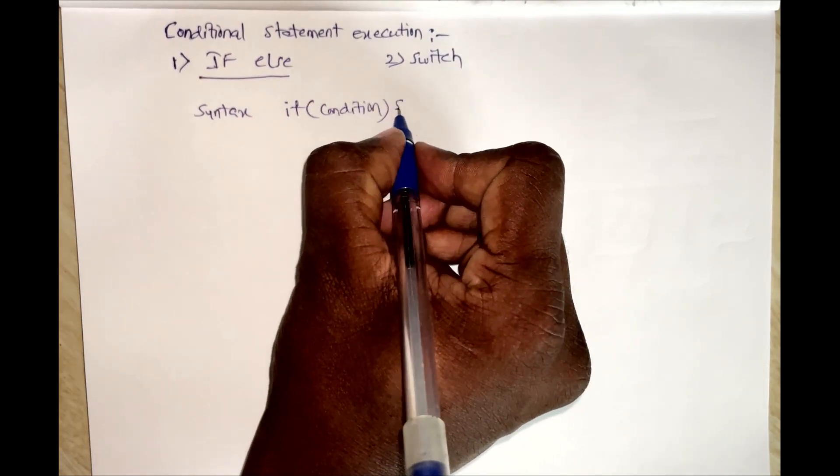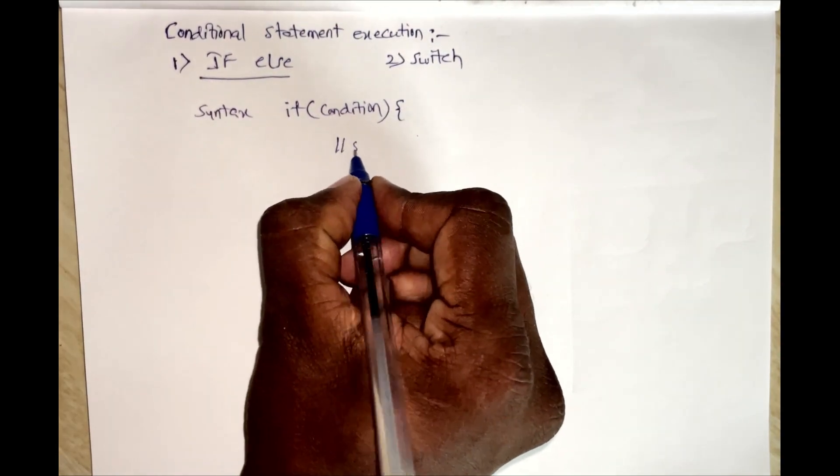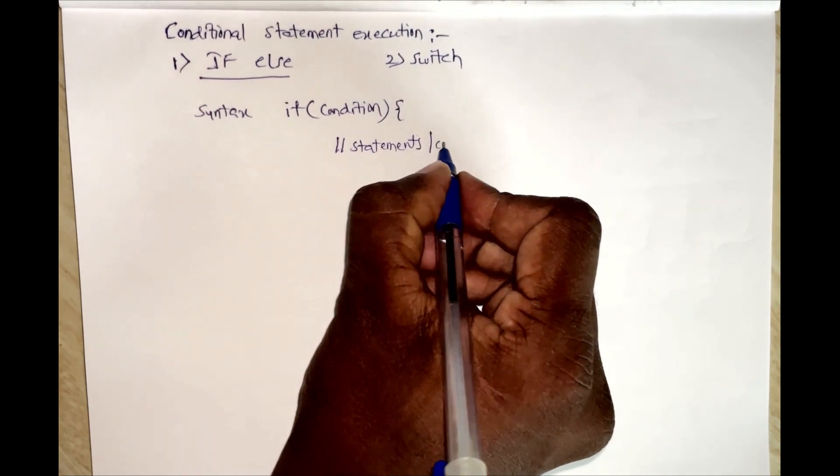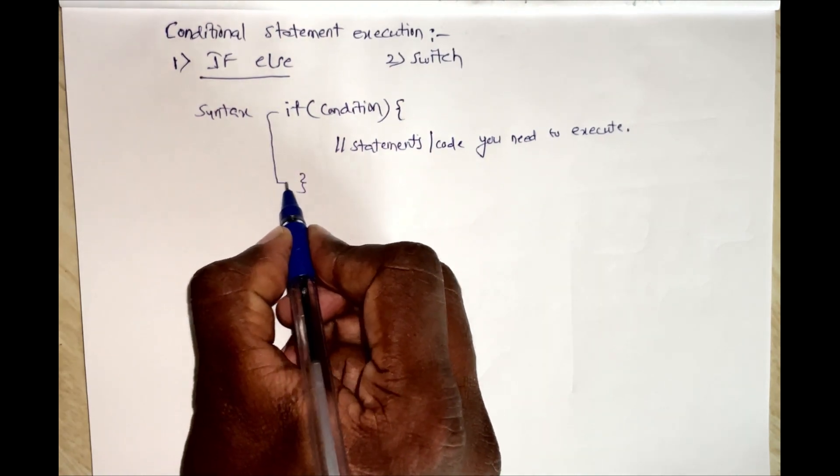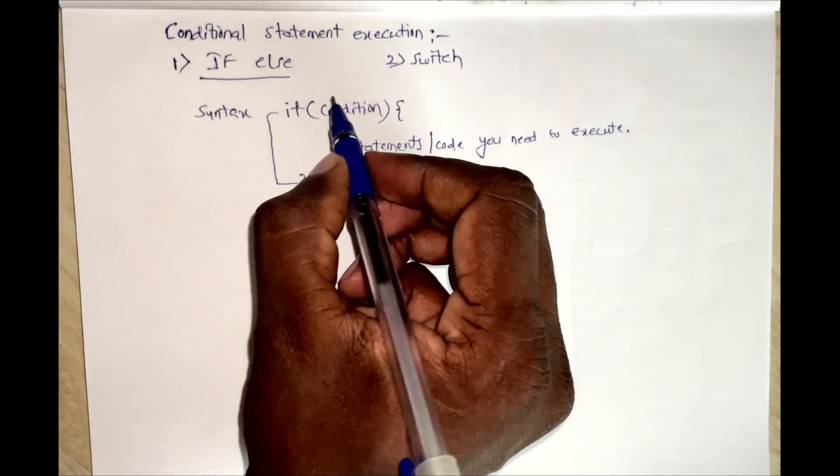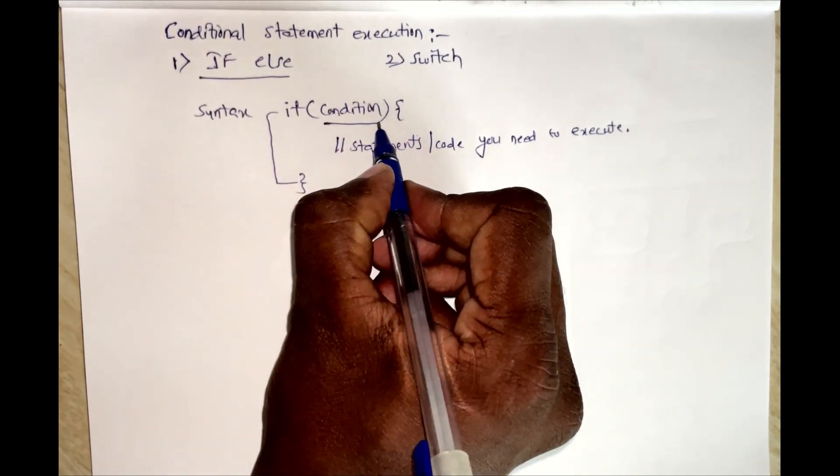And there is an open curly brace and the statements that you need to execute or code that you need to execute and the closed curly brace. So this is called conditional statement execution. Here if this condition is true, then only it is going to execute this particular block of code.